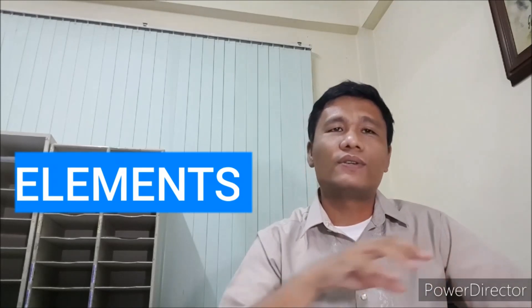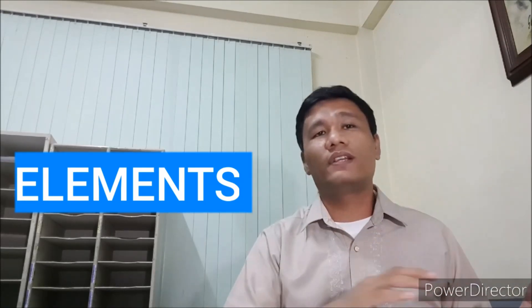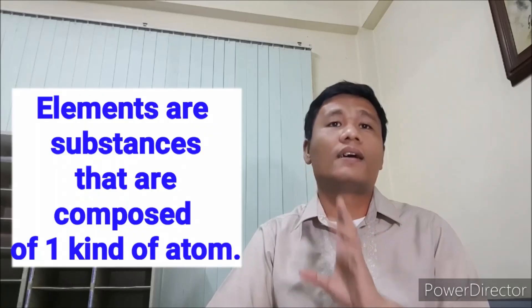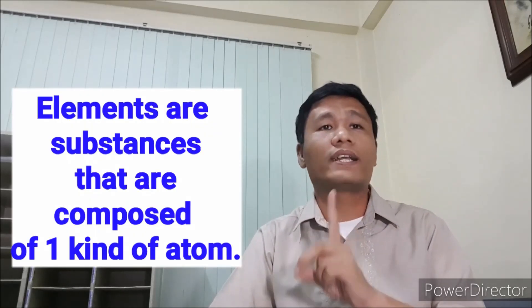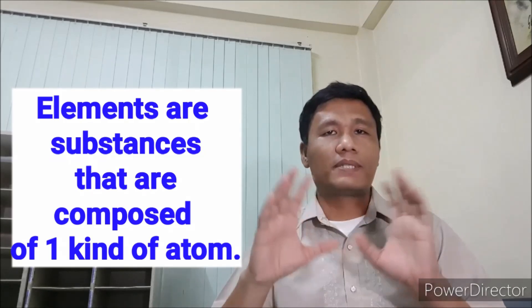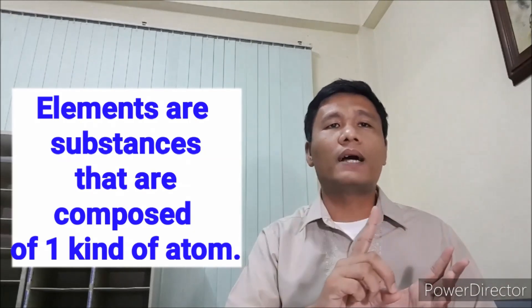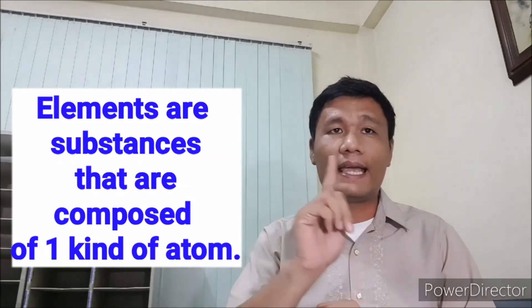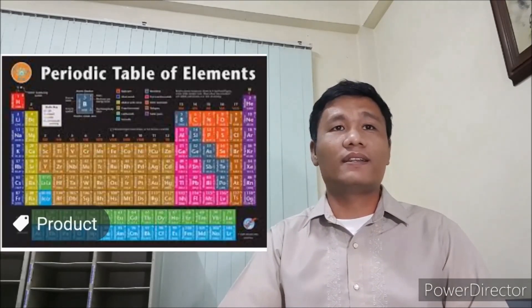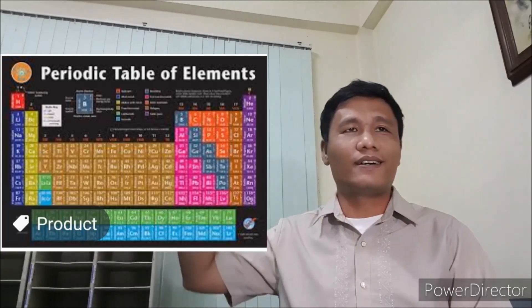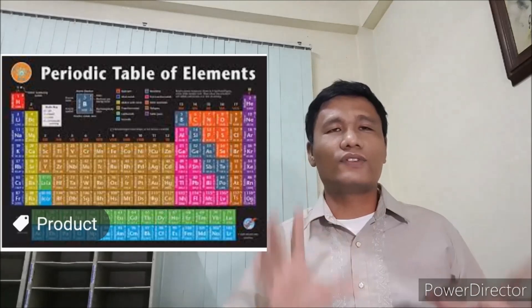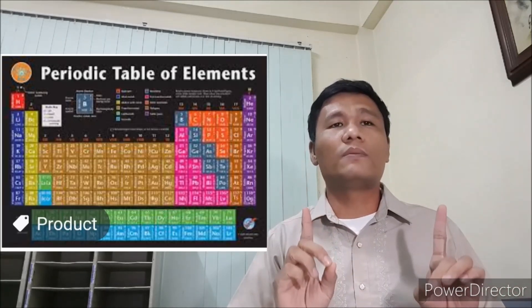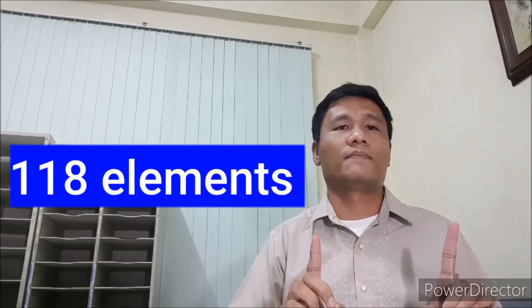So what are elements? As I said in the previous video, elements are any substance composed of only one kind of atom. Substances composed of only one kind of atom are considered elements. Normally, elements are those substances written in the periodic table. As of today, we have a total of 118 elements.